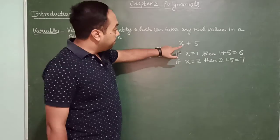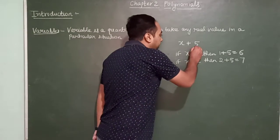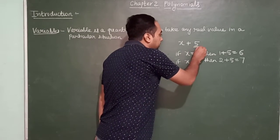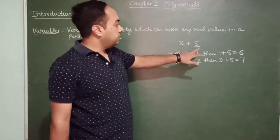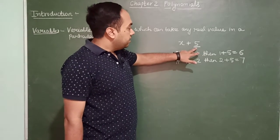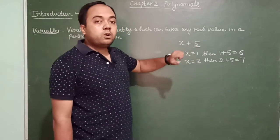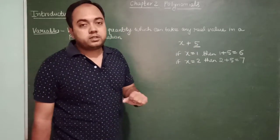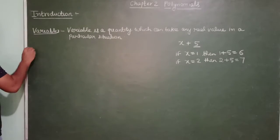But the value 5 remains fixed. This fixed value is called a constant. So our next definition is constant.